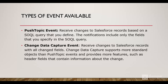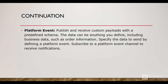We will see a demo of CDC in the next video. In this video, we will see a demo about push topic. The third type of event is platform event. Platform event is a completely customized payload with a predefined schema that creates an object, just like a custom object where we can define a custom payload. The data can be anything we define, including business data such as order information. After the platform event is published, we use the Apex method EventBus.publish to publish that platform event, and whoever is subscribing to the message channel for the platform event will receive notifications. Platform events give us the ability to customize the payload we send in the message.